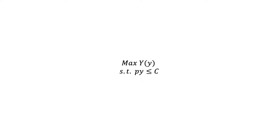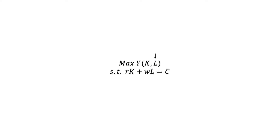This general equation is not usually useful by its own and is reformulated so it is closer to real-world examples. In this new equation, we see that the maximum production given by two factors of production, capital and labor, is subject to a budget constraint c, equal to the sum of the factors of production.